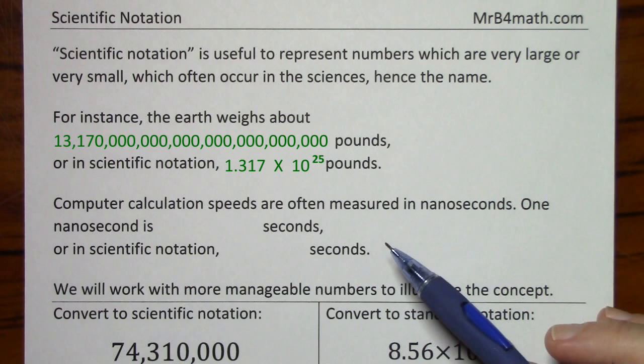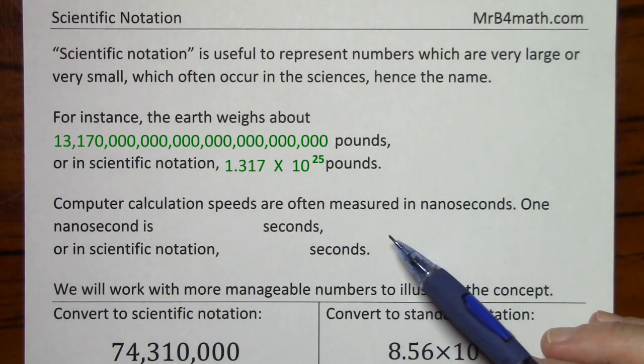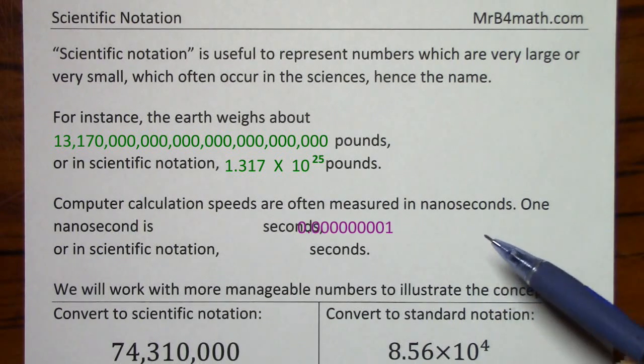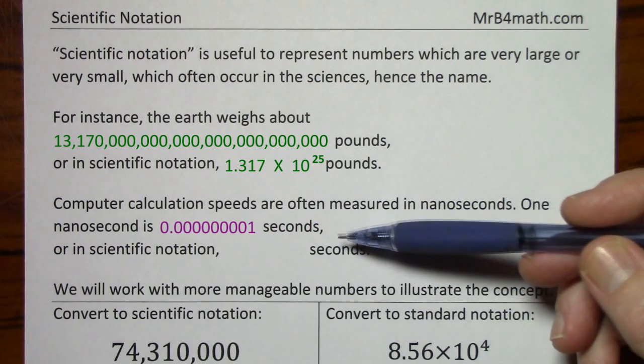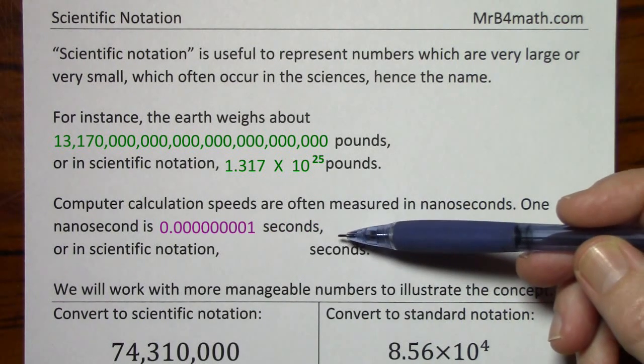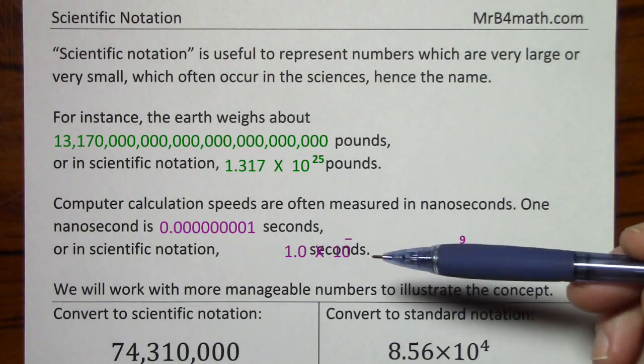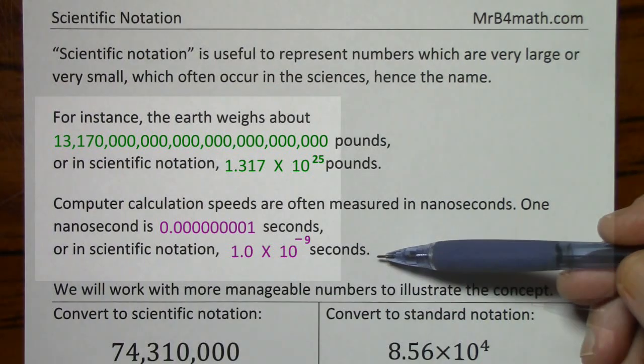Another example is computer calculation speeds, which are often measured in nanoseconds. One nanosecond is one billionth of a second, written here in standard notation, or written here in scientific notation.